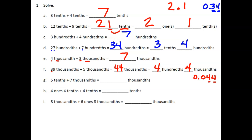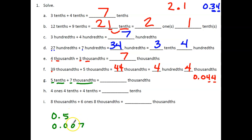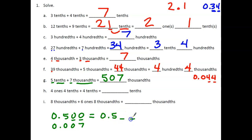Now this is where it gets tricky — we're going to change it up. Looking at G: we have 5 tenths plus 7 thousandths. We can't add those together without renaming because they're unlike units — tenths plus thousandths. So we take 5 tenths, place the 7 thousandths in the thousandths place, and annex two zeros. Now 5 tenths equals 500 thousandths, so 500 thousandths plus 7 thousandths equals 507 thousandths.